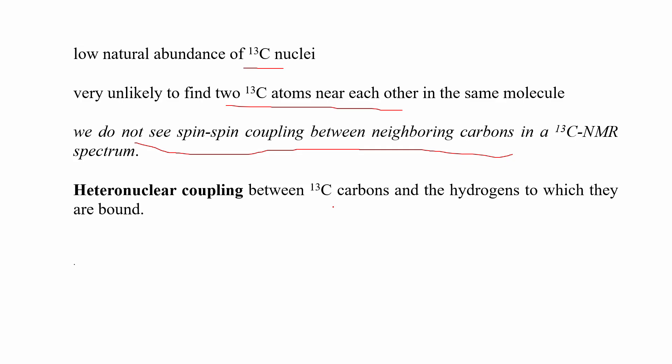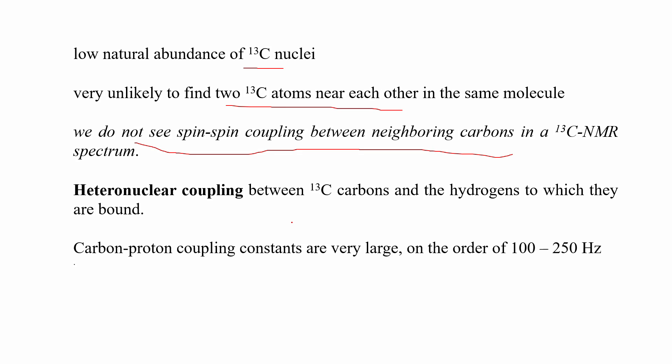But there may be heteronuclear coupling — that is, coupling between carbon-13 atoms and the hydrogen to which they are bound. Such types of coupling are called heteronuclear coupling, or carbon-hydrogen coupling. In the case of proton coupling, it is homonuclear coupling, that is proton-proton coupling. But in carbon-13 coupling, the coupling is between carbon-13 and hydrogen. Such coupling is called heteronuclear coupling.